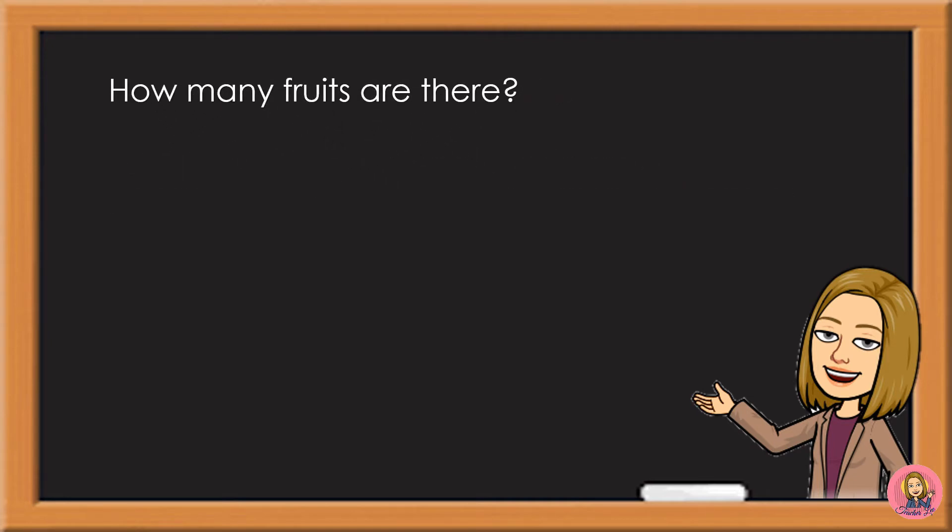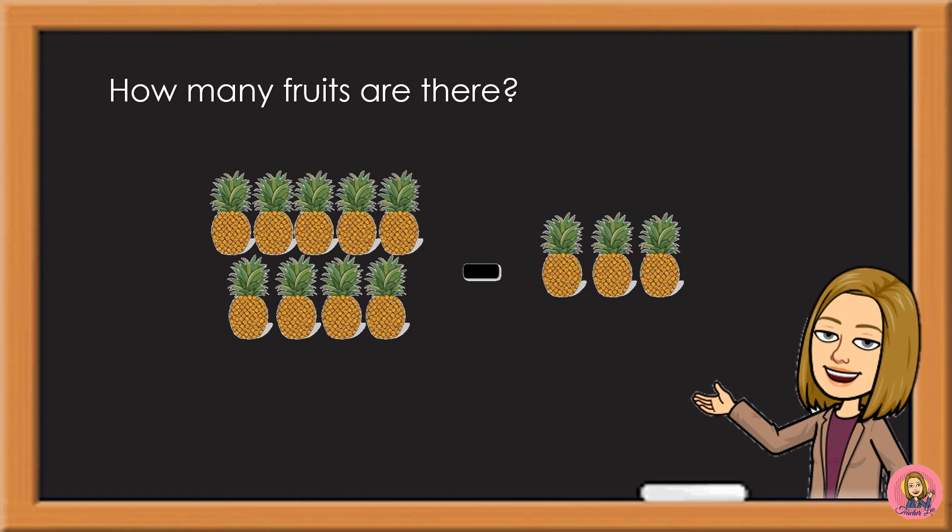How many fruits are there? 9 minus 3 is equal to 6. Or in this form, 9 minus 3 is equal to 6.